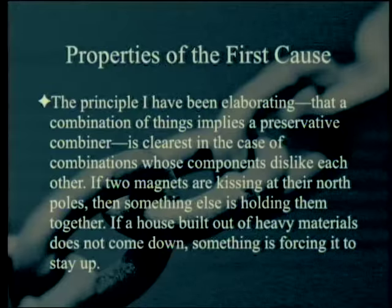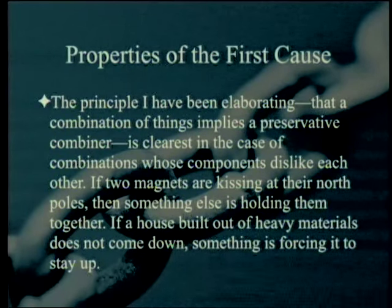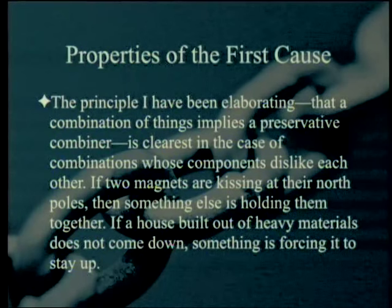Every combination presupposes a combiner. Every combination that comes into existence depends on a combiner to produce it, and every combination that exists depends on a combiner to sustain it. But everything familiar to us is a combination of things, so nothing familiar to us is a first cause — and a first cause must be something quite unfamiliar. Is it some purely formless matter underlying all combinations, or some entirely indivisible particle? The principle that a combination of things implies a preservative combiner is clearest in the case of combinations whose components dislike each other. If two magnets are kissing at their north poles, something else is holding them together.